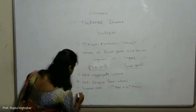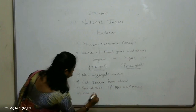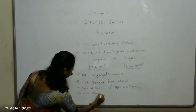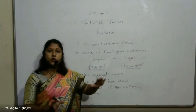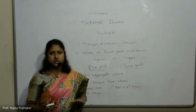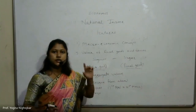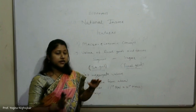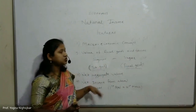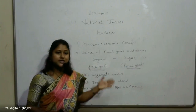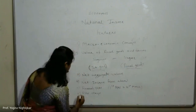The next feature is the flow concept. National income is the flow of goods and services produced in the country during a year. It includes only those goods and services which are actually produced.